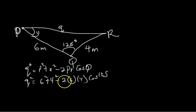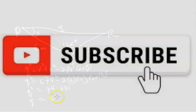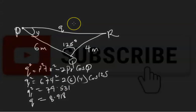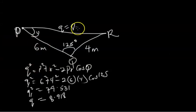Q squared will be equals to 6 squared plus 4 squared minus 2 into 6 into 4 cos 125. If you sum this up, Q squared will be equals to 79.531. So Q would be equals to 8.918.